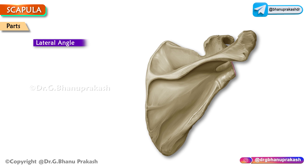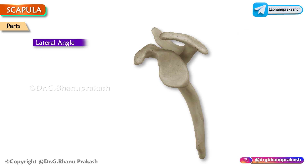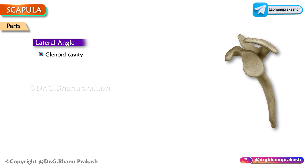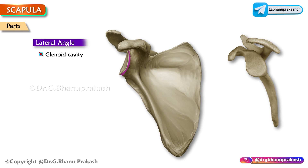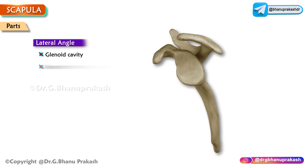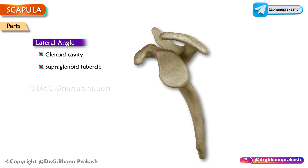The lateral angle forms the glenoid cavity, which articulates with the head of the humerus to form the shoulder joint. The neck is the adjoining constricted part. The supraglenoid tubercle is a rough area above the glenoid cavity.